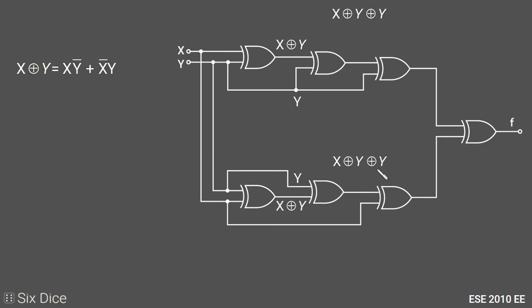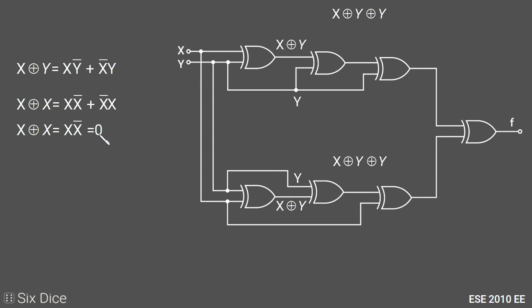Whenever we XOR two variables which are the same — here y XOR y — we get xy̅ + x̅y, which simplifies. Since y and y̅ are complements in AND together, the result is always zero. So y XOR y equals zero, and we are left with x XOR zero.